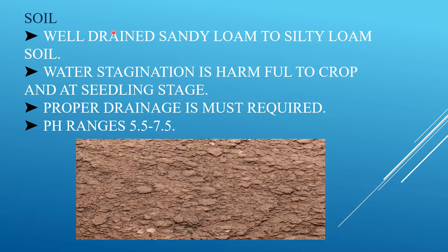For soil requirements in maize cultivation, it requires well-drained sandy loam to silty loam soil. Water stagnation is harmful to the crop, especially at the seedling stage, as it reduces yield. Proper drainage is a must. The pH range of 5.5 to 7.5 is best suitable for maize cultivation.